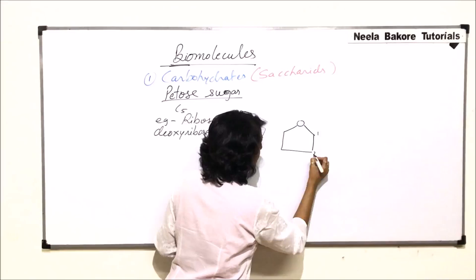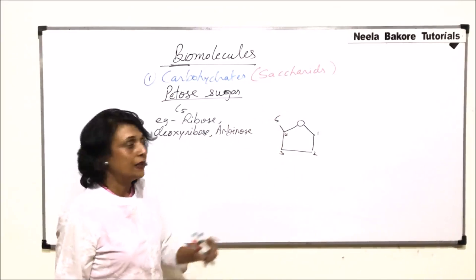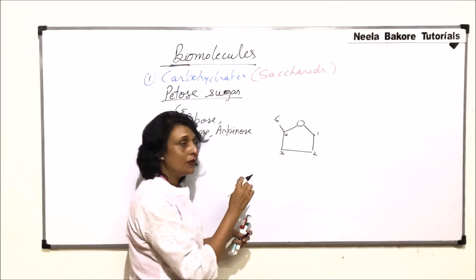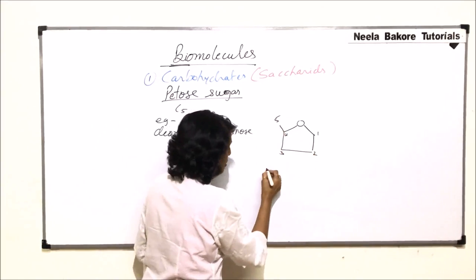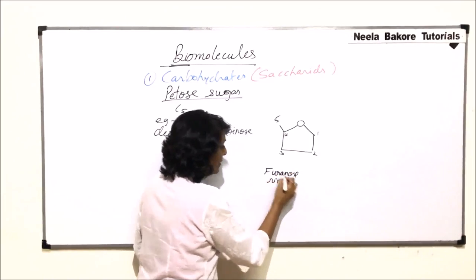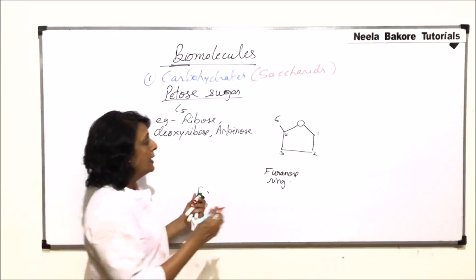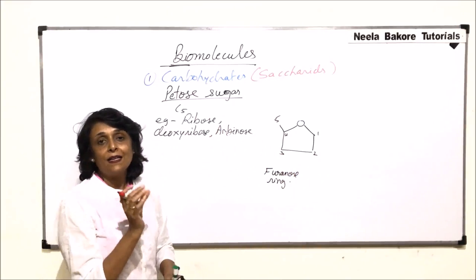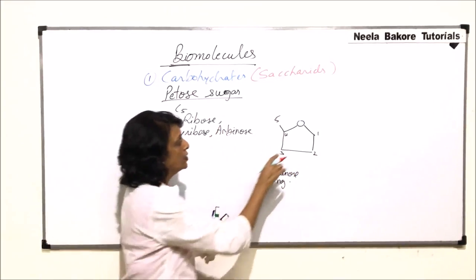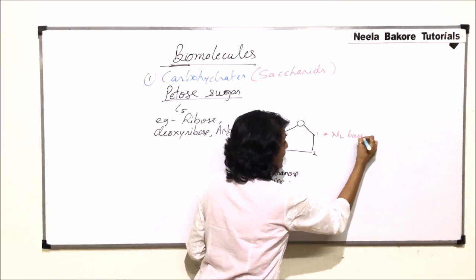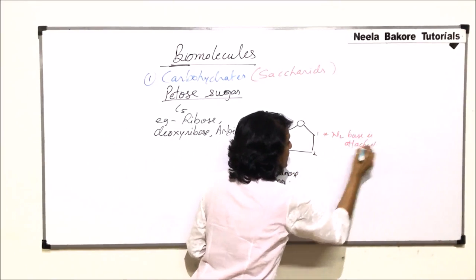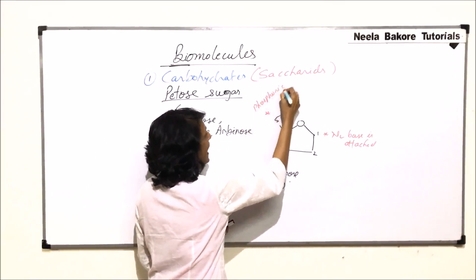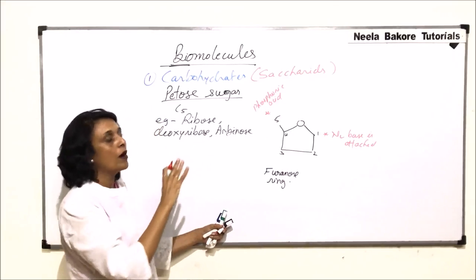For a five-carbon sugar, the ring is formed between carbon one and carbon four. The ring formed is a pentagonal ring with one through four carbons and one oxygen — meaning it is a furanose ring. Carbon one is the position where the nitrogen base is attached, and carbon five is where phosphoric acid gets attached when we come to the structure of nucleotides.